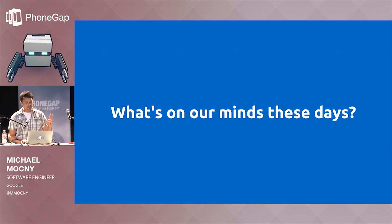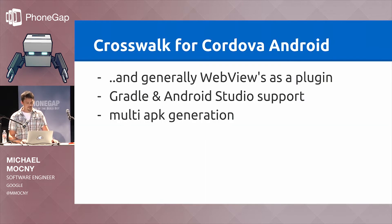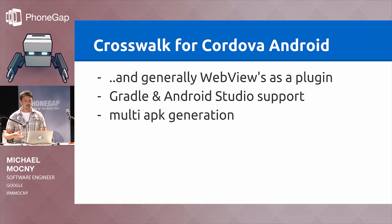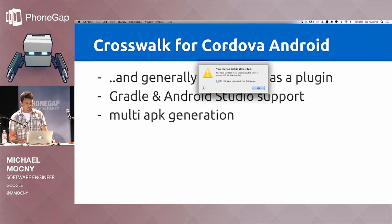So, two parts. The first thing I want to start with is what's on our mind — what do we want to see happen with Cordova going forward? A big one, especially recently, has been Crosswalk. This is starting to wrap up, but we would like to see this land and get into all of your hands. So web view as a plugin — Joe did a great presentation today, USB cables aside. Gradle and Android Studio support, multi-APK generation — these are things that are now available, maybe not as part of a release, but they have been implemented and will come soon.